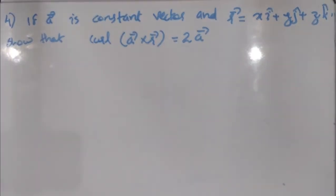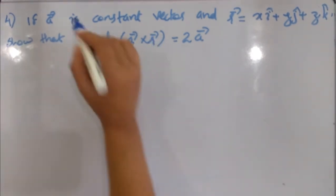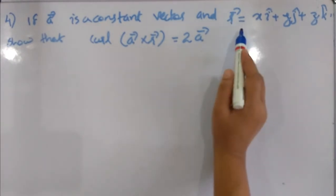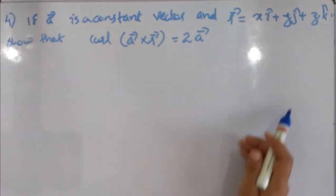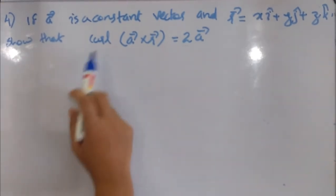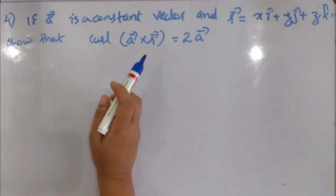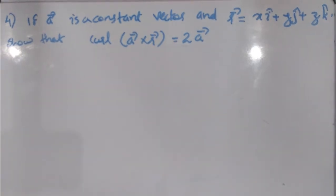The next problem: if vector a is a constant vector and vector r = xi + yj + zk, then show that curl of (a cross r) equals 2a.